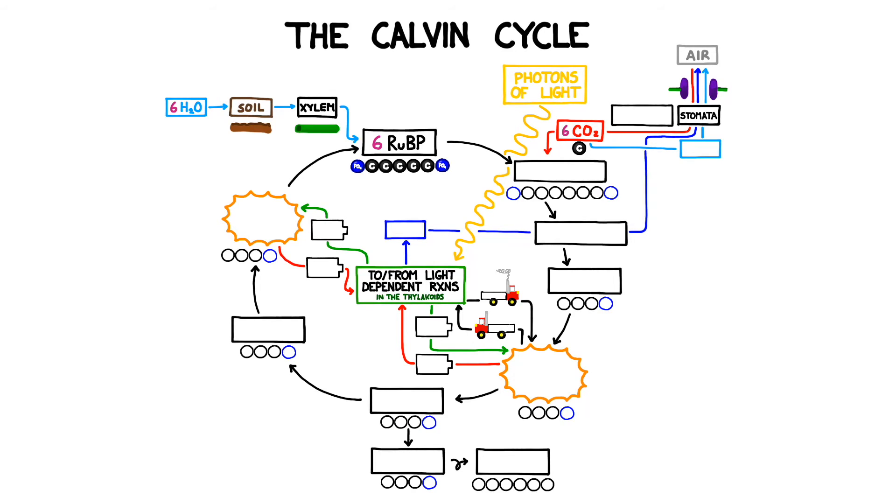The Calvin cycle begins here with a molecule called RUBP. Since its full name is ribulose 1,5-biphosphate, you can probably guess why we're going to stick to calling it RUBP. One molecule of RUBP contains five carbons. To run the Calvin cycle, we're going to use six molecules of RUBP with five carbons each. This is a total of 30 carbons. Combining five-carbon RUBP with the single carbon from CO2 yields an intermediate with six carbons.